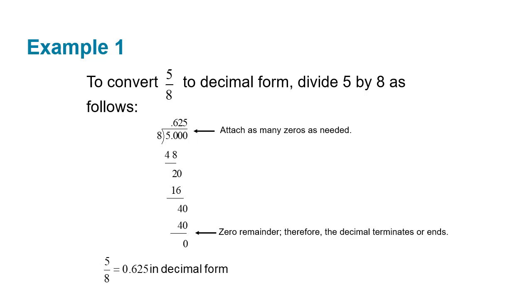So for instance, if we wanted to convert five-eighths to a decimal form, of course we could just stick it in technology, or if we want to do the long division, we put in our decimal point because we know it's going to be less than one, and we just start doing the long division until we get a remainder of zero. And we see it's 0.625. That would be a terminating decimal.